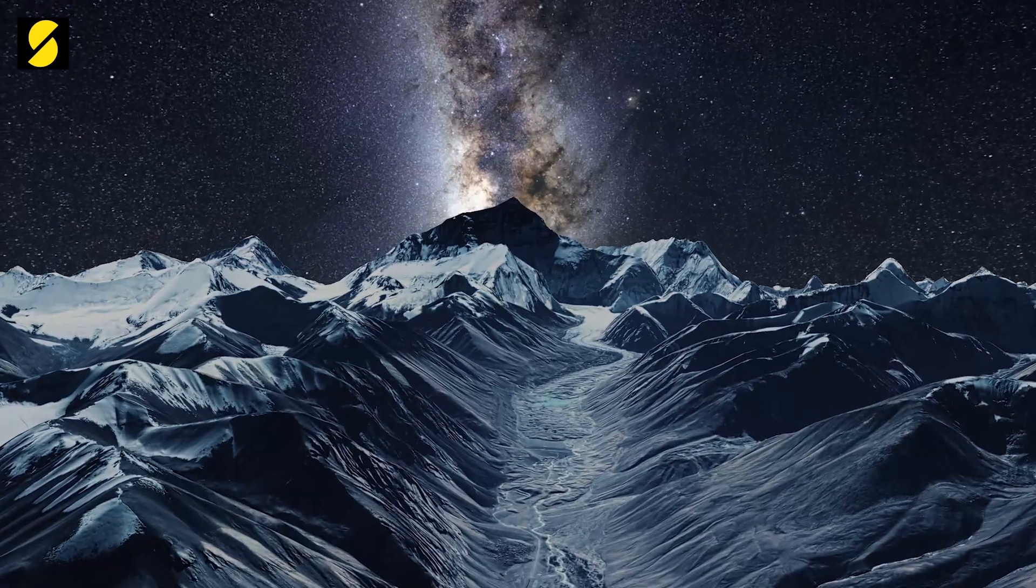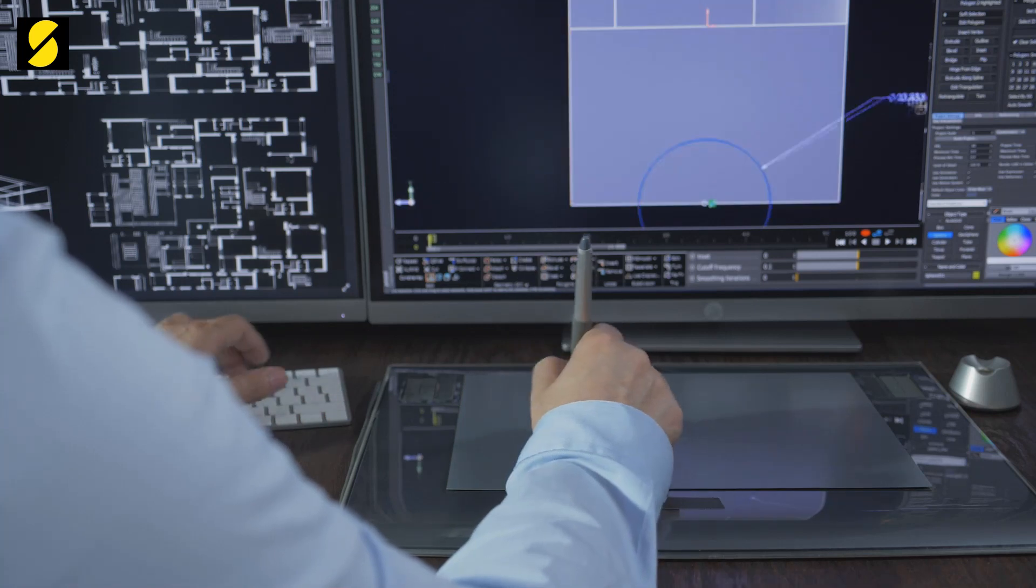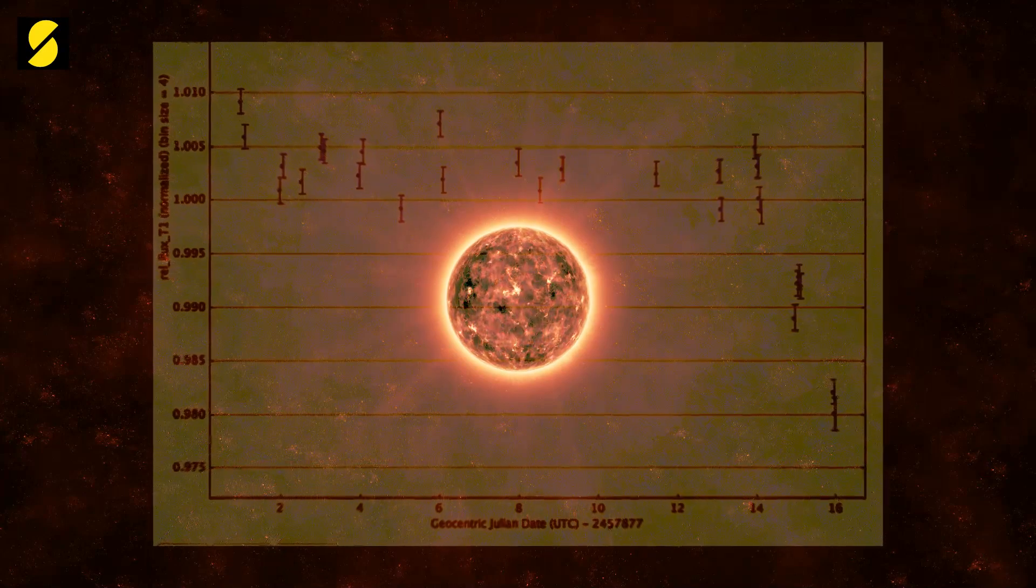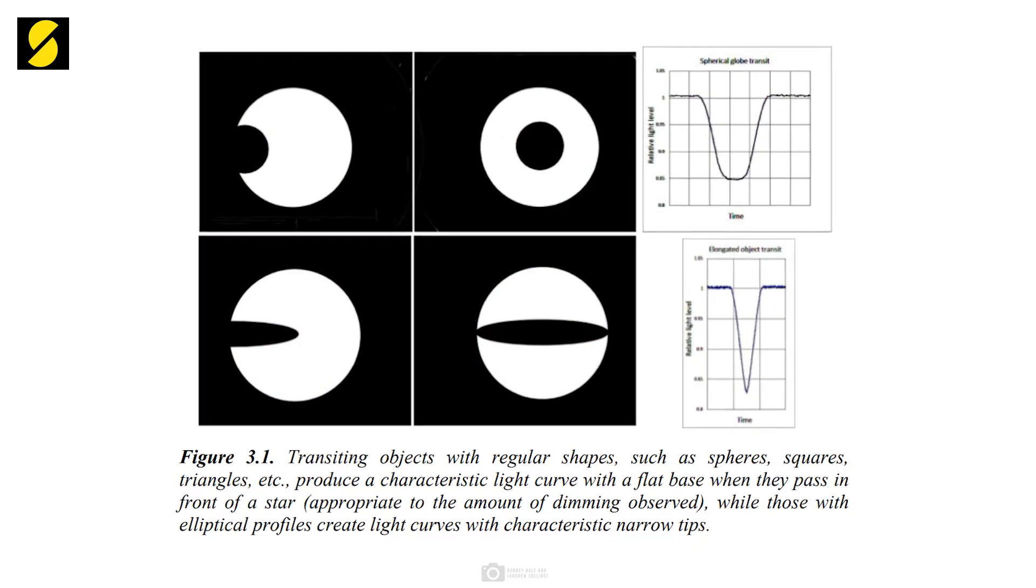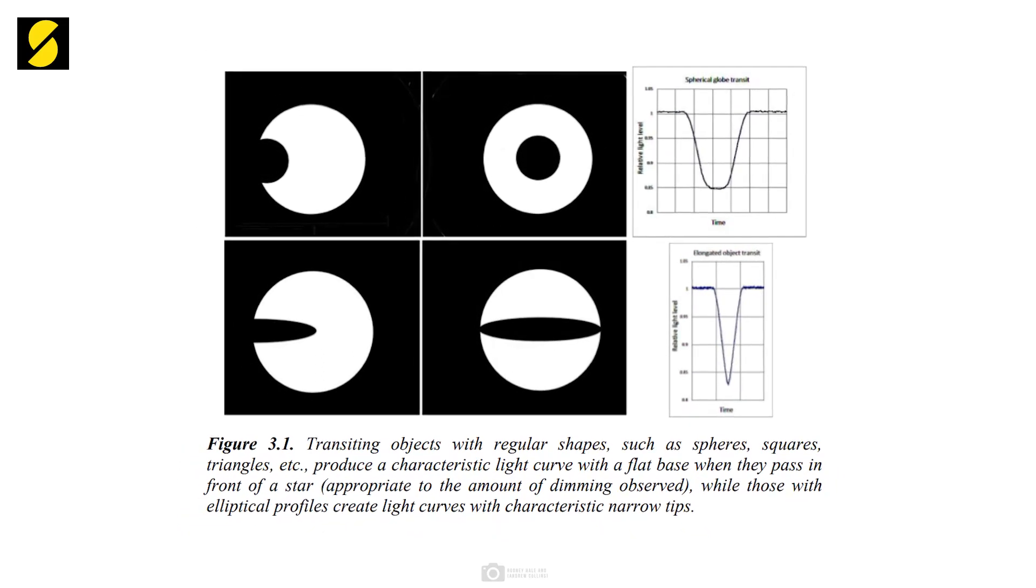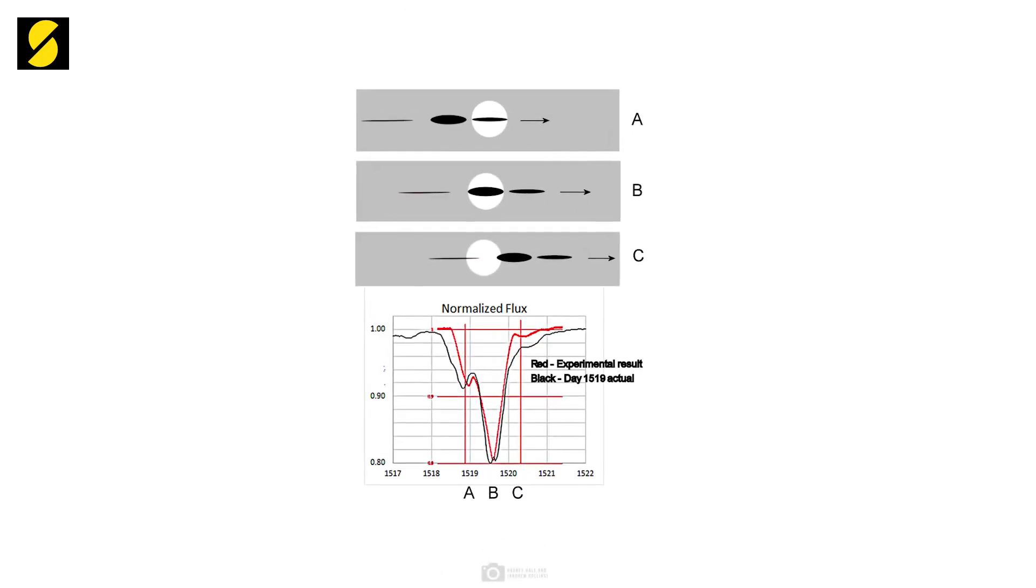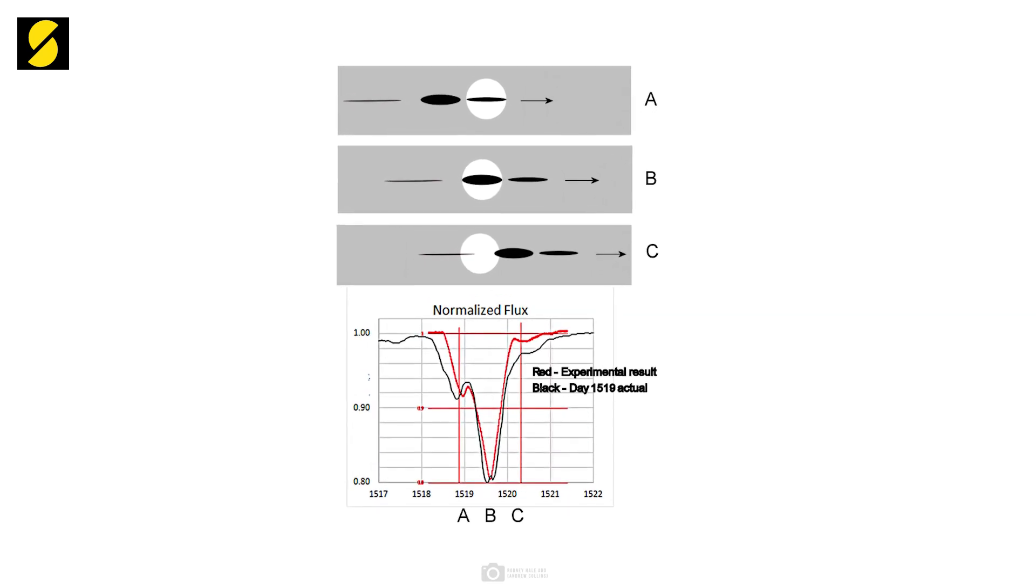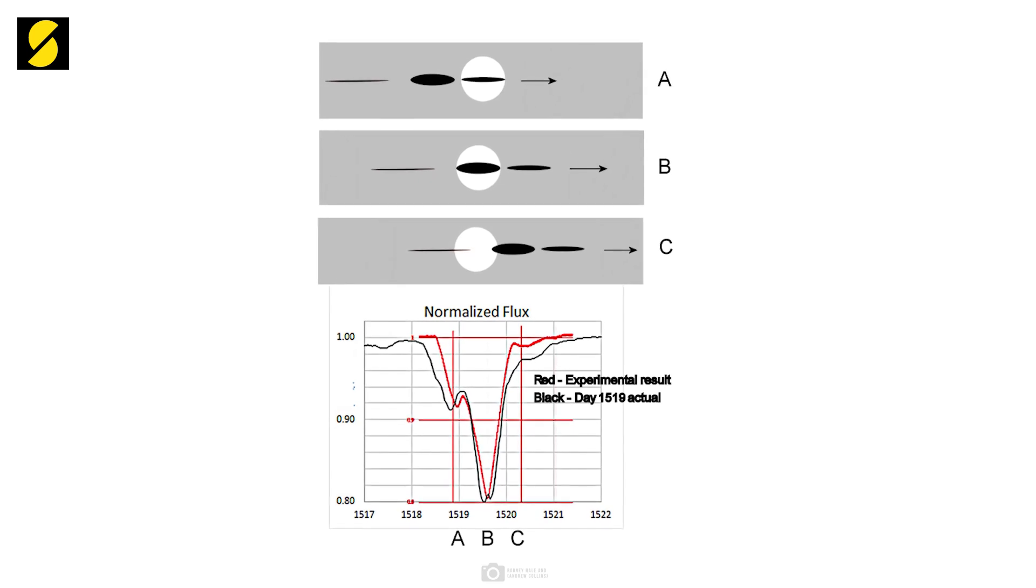Let's talk about what we do know. Rodney Hale, a chartered engineer and citizen scientist, tried to physically model what this object could be that's causing these dips. What he found out from his calculations is that the only thing that could cause these mysterious dimming are elliptical objects passing in front of the star. His model shows that there are three separate ellipses crossing the star one after the other, causing the light curve on day 1519 of the Kepler mission.